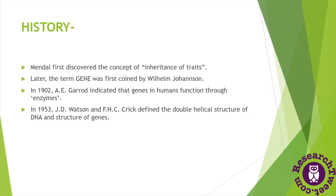Later, in 1902, a scientist named A.E. Garrod indicated that genes in humans function through enzymes, postulating that there are different types of enzymes through which genes perform all their functions. After that, in 1953, scientists J.D. Watson and F.C. Crick defined the double helical structure of DNA and were awarded the Nobel Prize for their achievements. By discovering the double helical structure of DNA, they also contributed to understanding the structure of genes, since all genes are made up of DNA molecules.